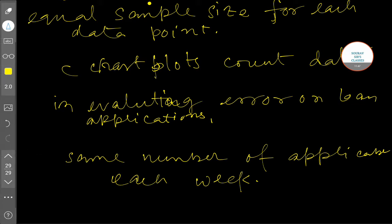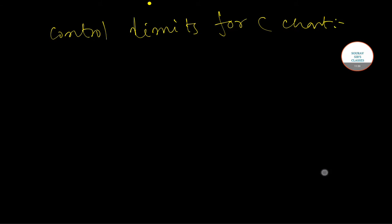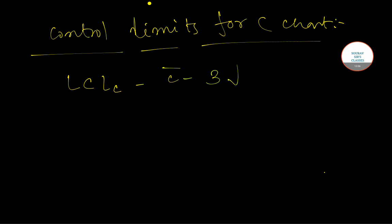Now we will check the control limits for C-chart. LCL_C equals C-bar minus 3 times the square root of C-bar. And UCL_C equals C-bar plus 3 times the square root of C-bar.